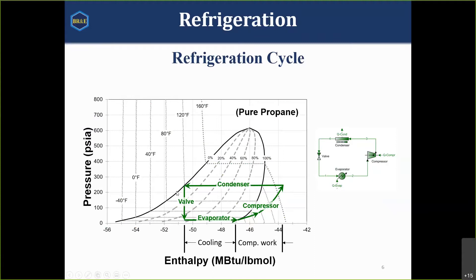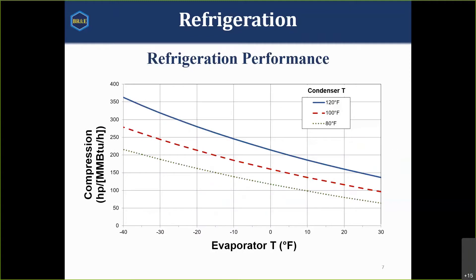Decreasing refrigerant in circulation reduces total power requirement — we're not pushing against a higher pressure in the compressor, and the moles going through the compressor go down, so you have a double effect from lower condenser pressure. Looking at compressor power as a function of condenser temperature, as the condenser temperature goes from 80 degrees up to 120 degrees, power requirements go up.